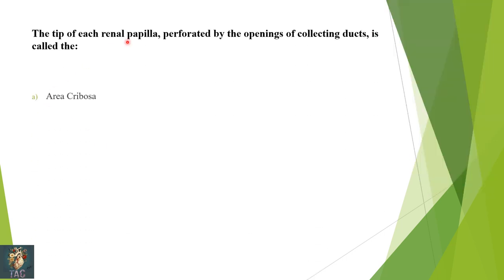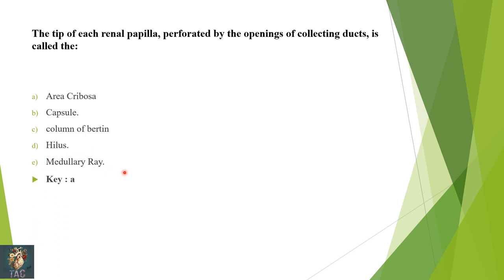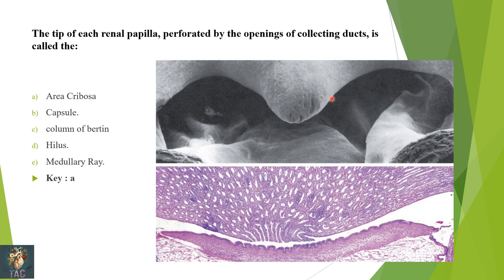The tip of the renal papilla perforated by the opening of the collecting duct is called — area cribrosa, the capsule, column of Bertin, hilum, or medullary ray? Looking at this scanning electron micrograph and H&E staining section through the tip of the papilla, you can see large numbers of collecting ducts perforating the tip, giving a cribriform appearance. That is why it is called the area cribrosa.